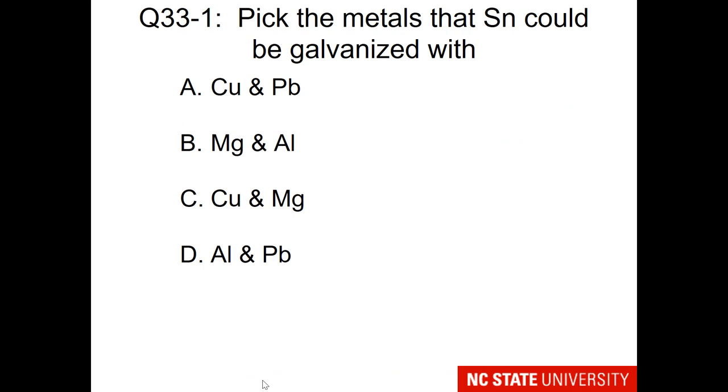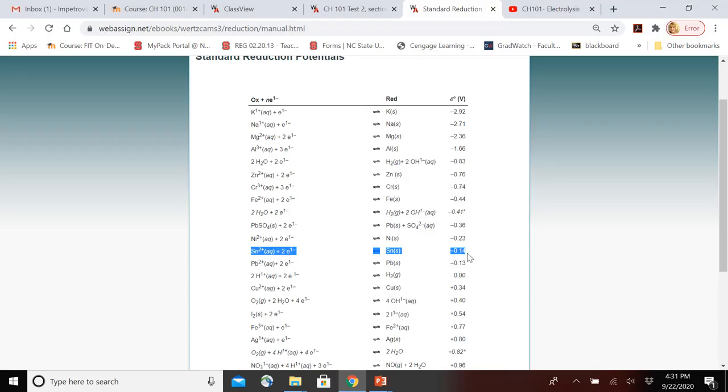So here is a question for you. Pick the metals that tin could be galvanized with. In order to answer this question, we are going to need to look at the chart. Here is where tin is on our reduction chart. You notice that aluminum and magnesium are higher up the chart, and lead and copper are lower on the chart. So what do you need to galvanize a metal? Something that is less reactive as a reducing agent, or more reactive as a reducing agent?